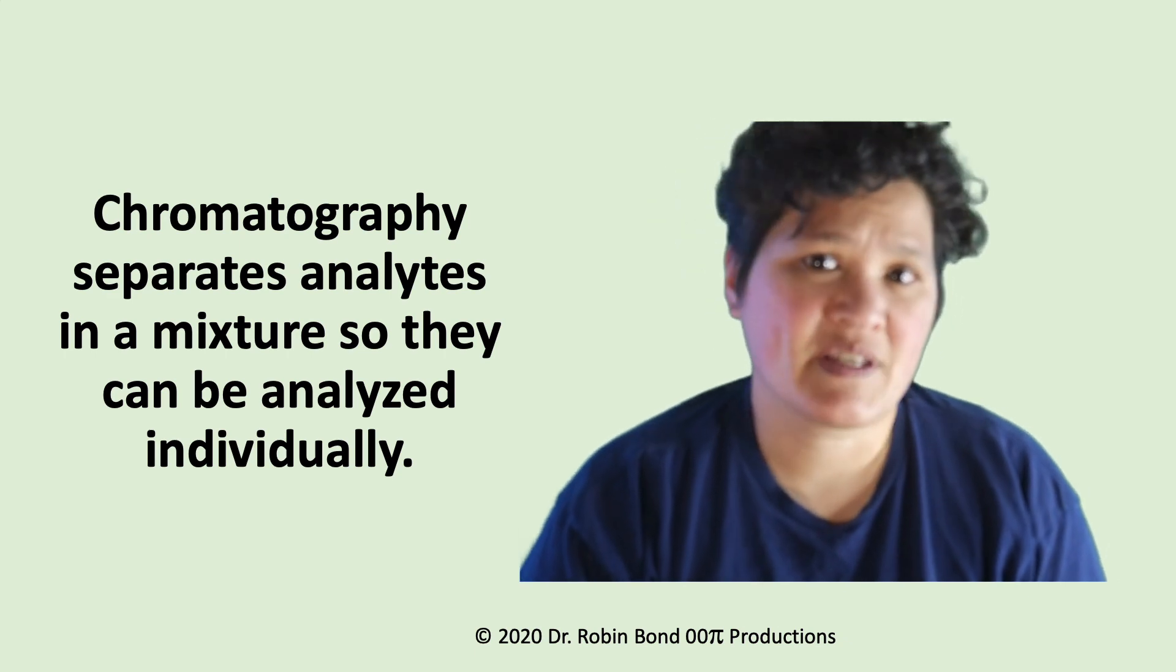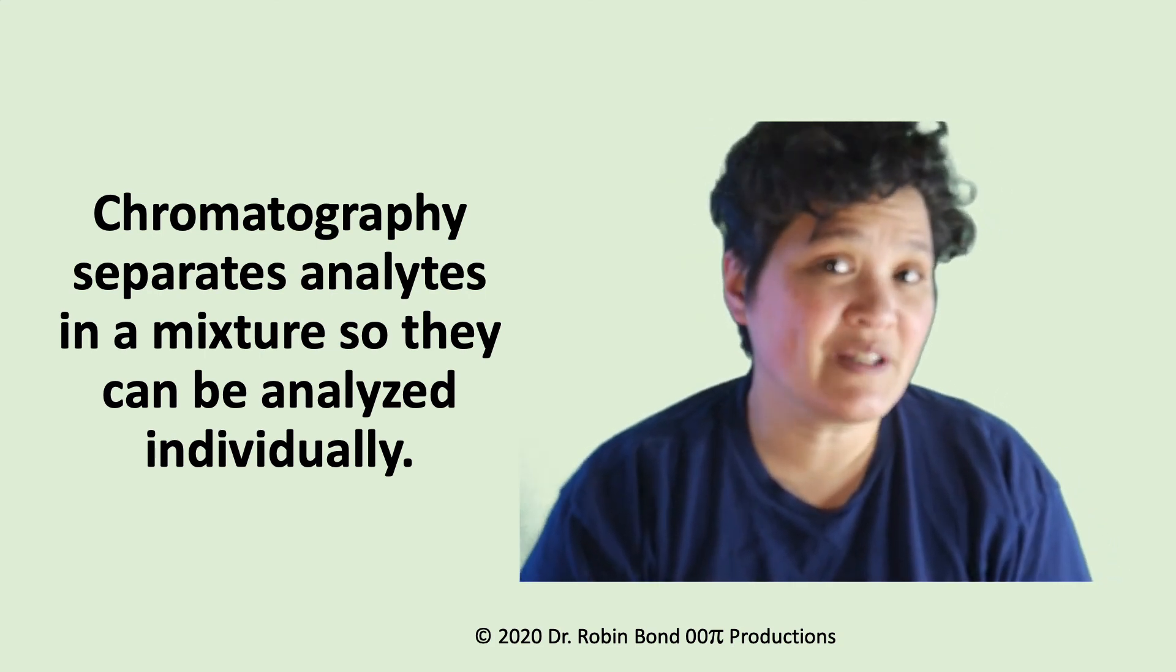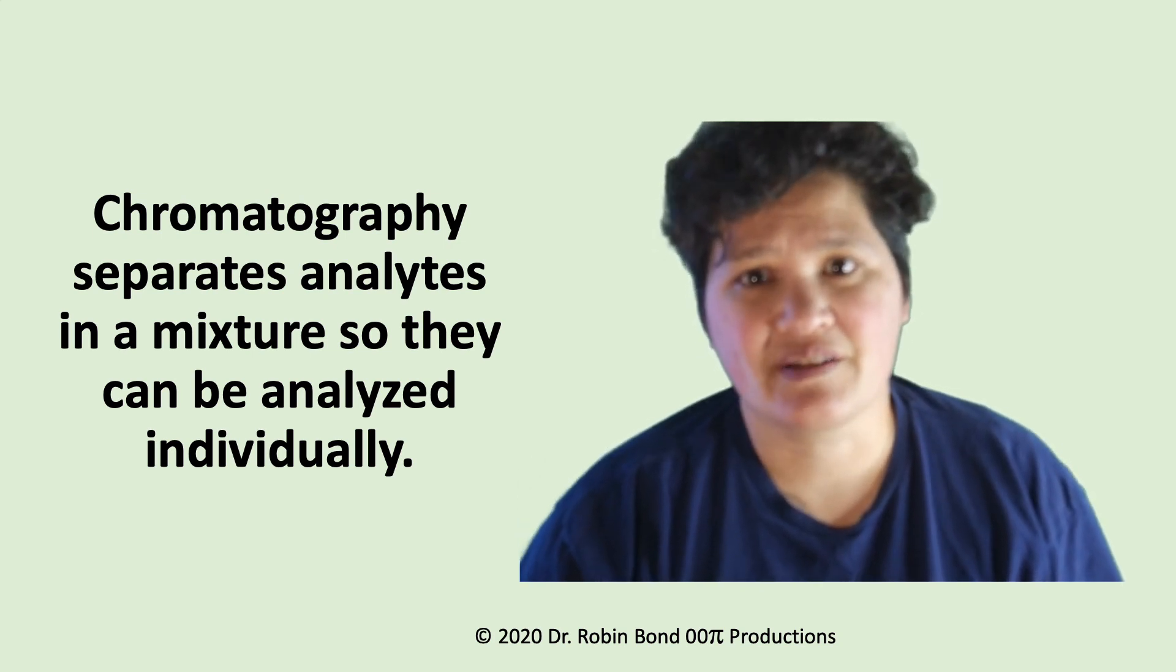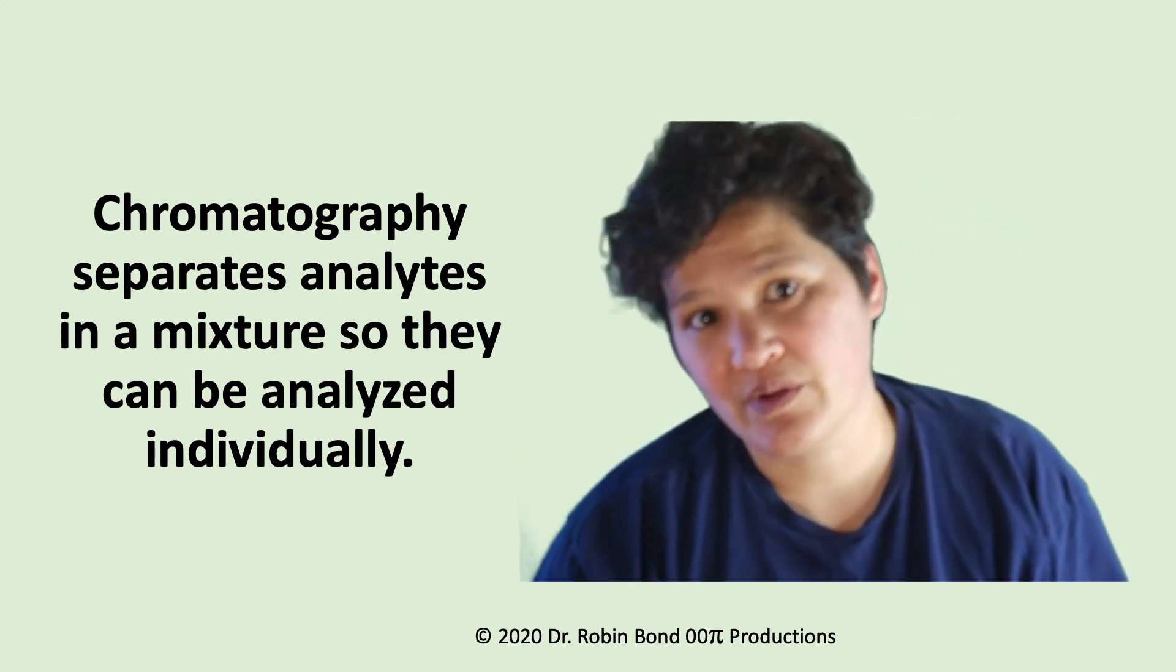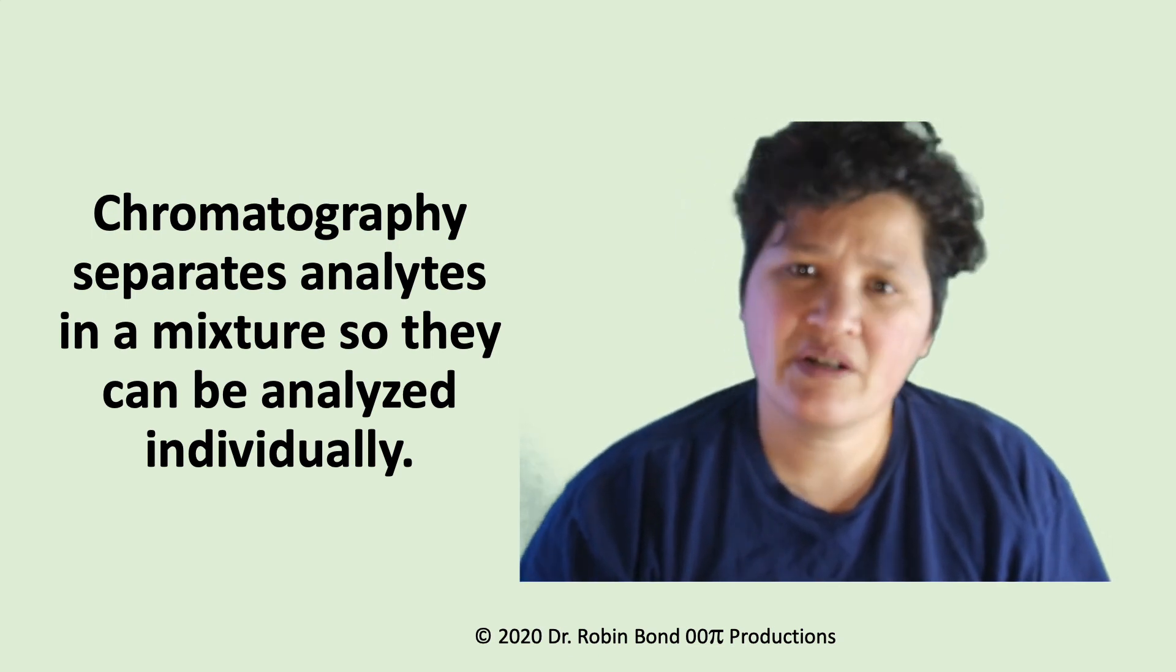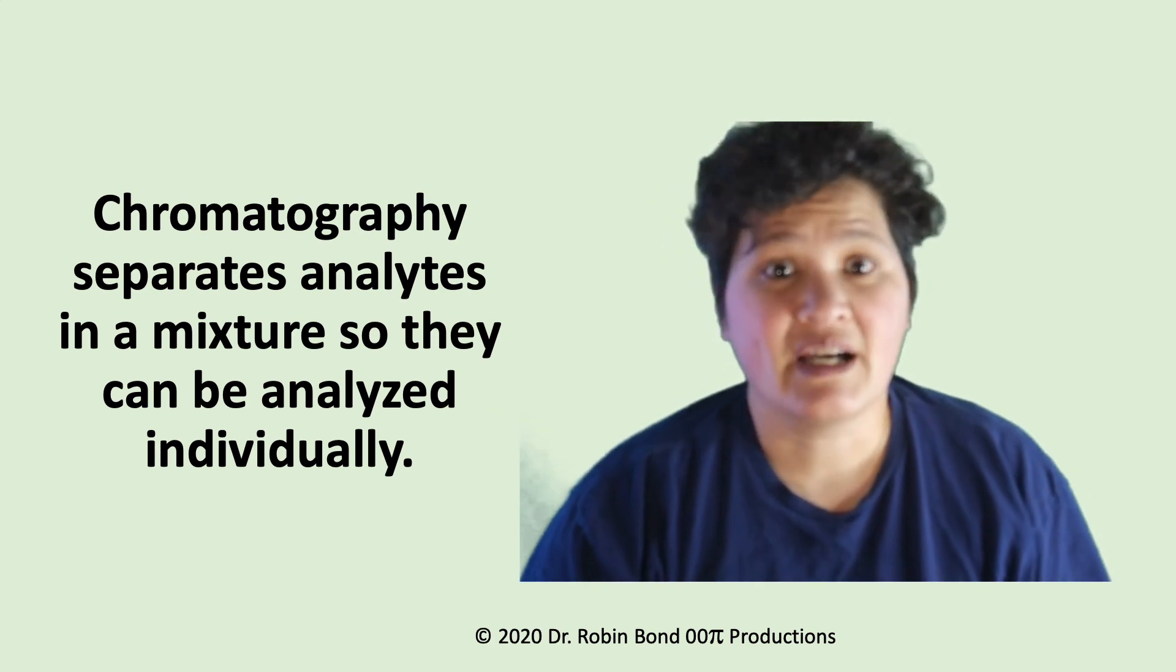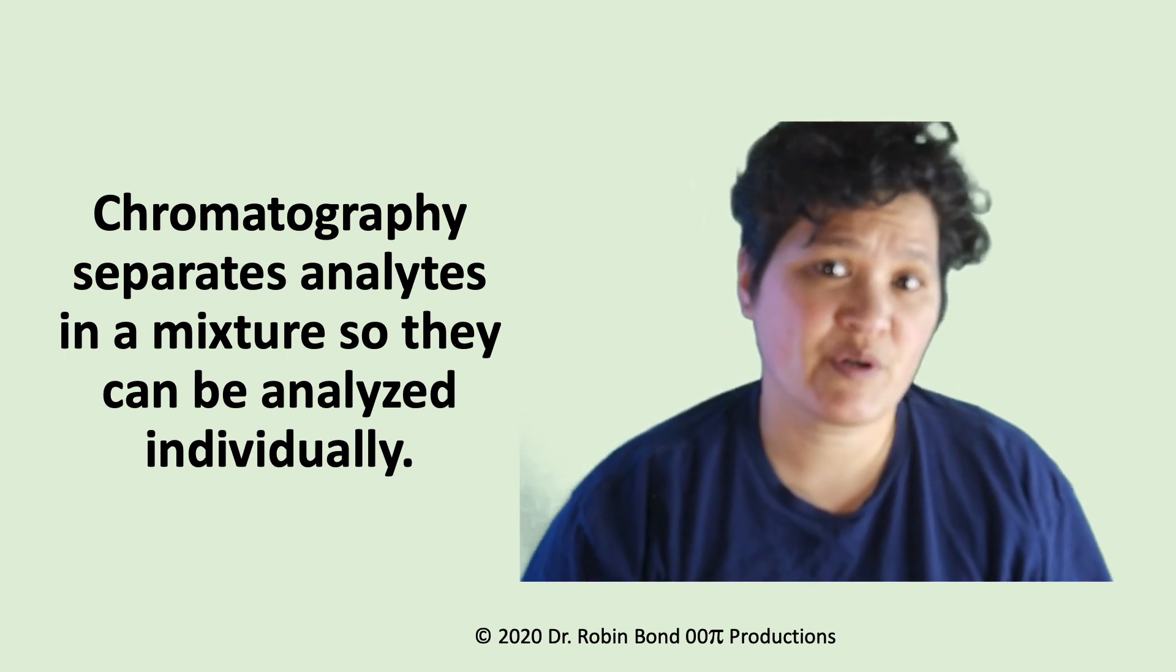To summarize, chromatography is a way of separating analytes in a mixture so they can be analyzed separately from each other. We can use chromatographic methods to do qualitative analysis, where we look at retention times or detector outputs to identify our analytes, or we can use them for quantitative analysis by looking at peak areas to determine the concentration of each analyte. Or we can do both. Understanding these basic principles will help you gain a deeper understanding of individual methods such as gas chromatography, liquid chromatography, and ion chromatography. I hope this was helpful and I look forward to seeing you soon.